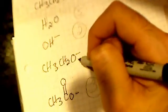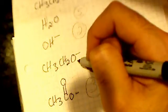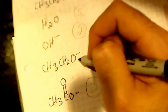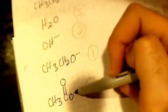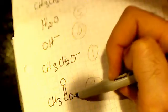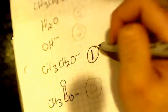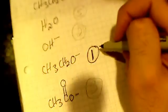So the conjugate acid of ethoxide is ethanol, and that's the weakest out of water, ethanol, and acetic acid. So that's going to be one, because it's the weakest acid.